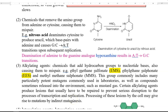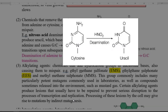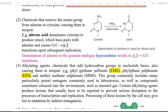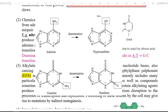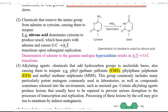Nitrous acid can deaminate adenine, cytosine, and guanine; only thymine cannot be deaminated by it. It deaminates cytosine to produce a uracil molecule, which base pairs with adenine. That is, the basic G-to-C base pairing is altered and turned into A-to-T base pairing upon subsequent replication by DNA polymerase. It can also deaminate adenine to produce a guanine analog called hypoxanthine. This also creates a mutation in such a way that a normal A-to-T base pairing is converted into G-to-C base pairing.